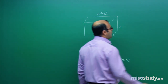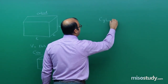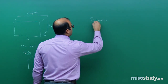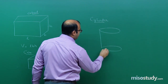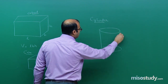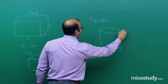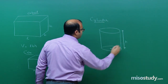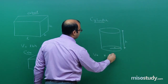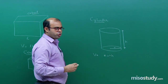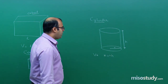Next we study the cylinder. For the volume of a cylinder having radius R and height H, the volume comes out to be πR²H. We also studied this in class 9th. So πR²H is the volume of the cylinder.